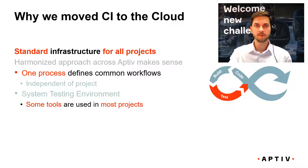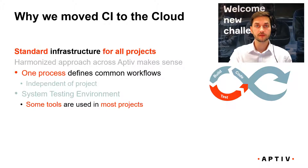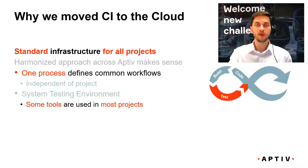But when it comes to CI-CT, a typical approach in the past was that the engineering team starting a new project would set up their own local CI-CT environment, where they would have a workstation running an automation server like Jenkins, and install necessary plugins in order for their CI-CT flow to be automated the way they needed. The problem with this approach is that for every new project, we risk reinventing the wheel over and over again.